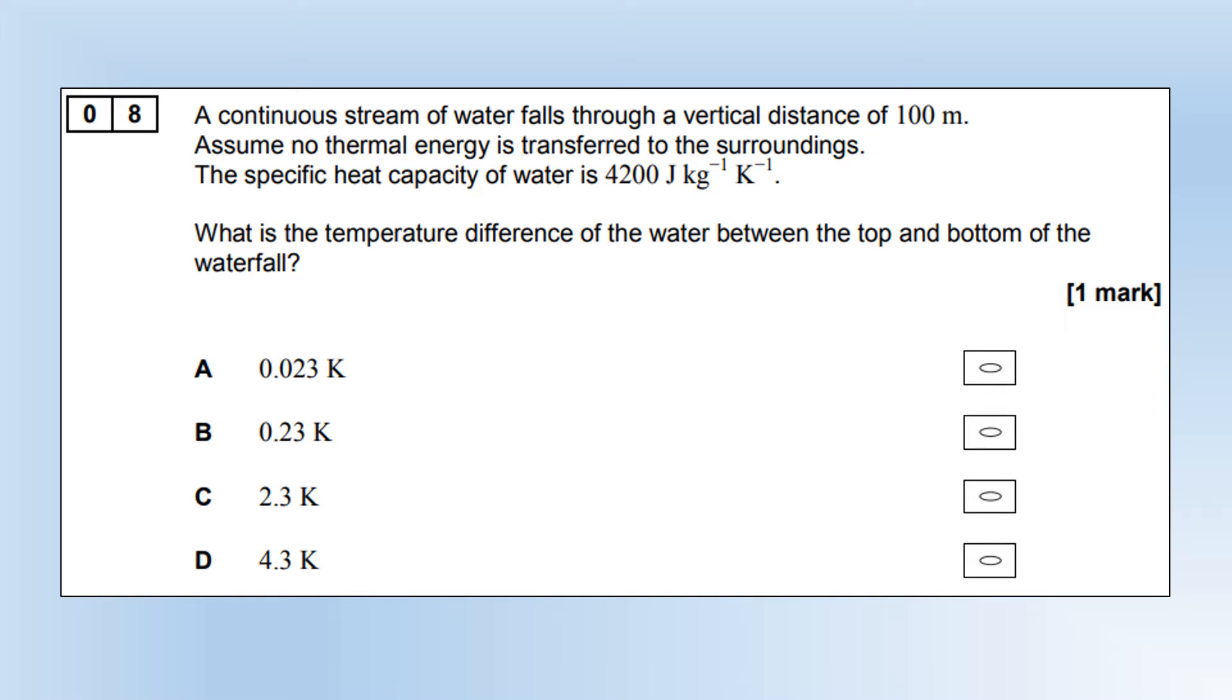You've got a continuous stream of water falling through a vertical distance of 100 meters. Assume no thermal energy is transferred to the surroundings. The specific heat capacity of water is 4200. What is the temperature difference of the water between the top and the bottom? Essentially, the GPE is going to be turned into kinetic energy, which is increasing the temperature. If we figure out the change in GPE, we can work out the thermal energy supplied to the water, equate that to MC delta T, rearrange it, plug the numbers in, and we get the temperature change of 0.23 Kelvin, which is option B.